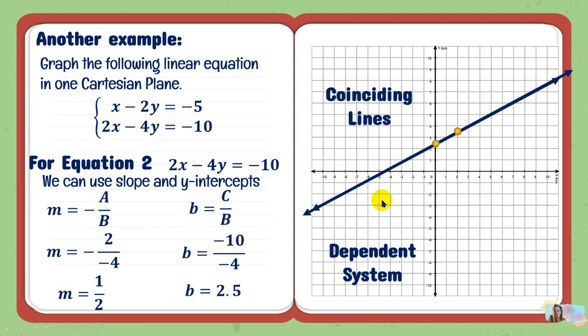There are cases where we can't avoid decimal values. In that case, we use the slope and y-intercept method as shown. We still have another option: graphing by two points, where we substitute values of x to get corresponding y values and plot those points. The link for that method is in the description box.